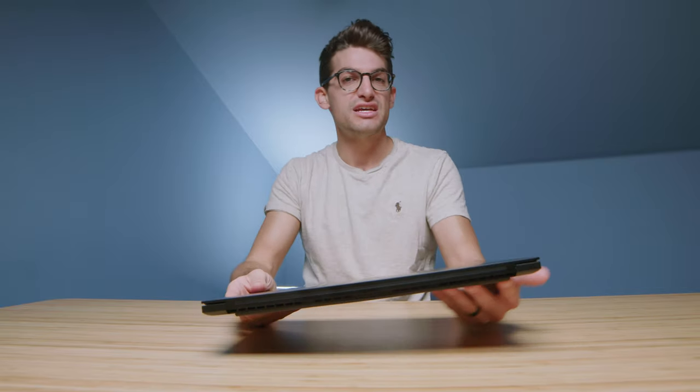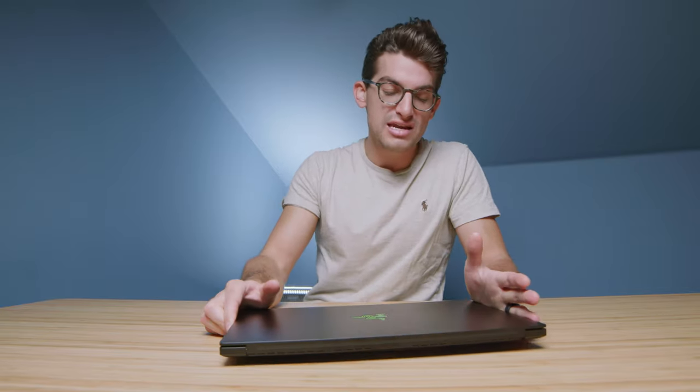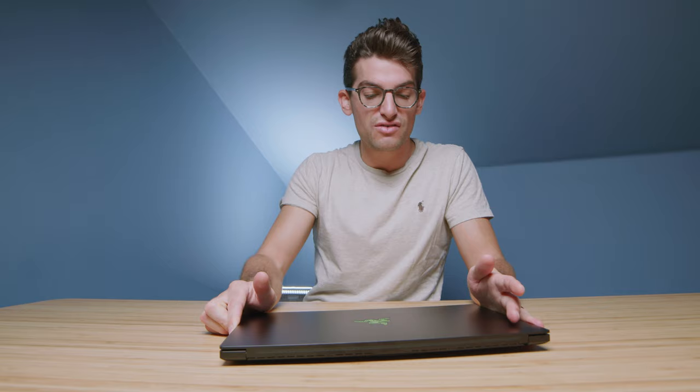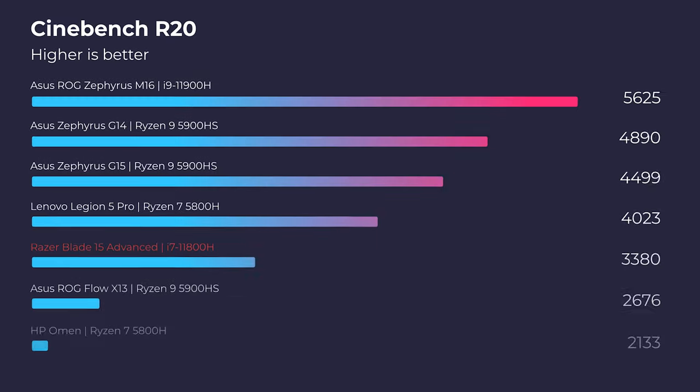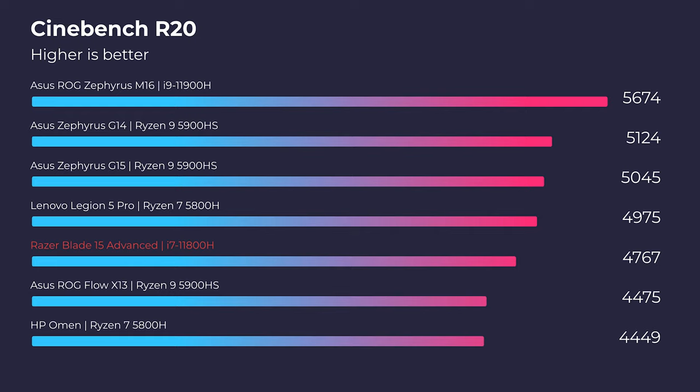What we have here is the RTX 3080, 32 gigs of RAM, one terabyte SSD, and the i7-11800H. Kicking off the performance benchmarks, we're going to look at Cinebench R20, R23, Geekbench single-core, and multi-core.